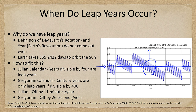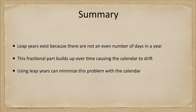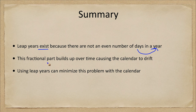This is the Gregorian calendar. Is it perfect? No — it's off by 26 seconds a year, but it will take a very long time for that to add up to a significant difference. To summarize: leap years exist because there are not an even number of days in a year. That fractional part builds up over time, causing the calendar to drift, and adding an extra day via leap years helps minimize this problem.